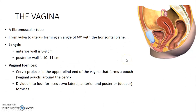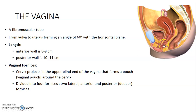The vagina is a fibromuscular tube from the vulva to the uterus and usually forms an angle of 60 degrees with the horizontal plane. Its anterior wall is eight to nine centimeters but the posterior wall is longer at 10 to 11 centimeters.